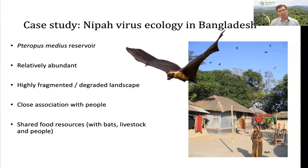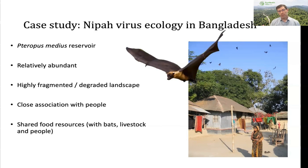In Bangladesh, it's very common to see trees with bat colonies roosting in them — they live very close to people and can be found all over the country. This species is abundant and common throughout the Indian subcontinent, across South Asia — Sri Lanka, India, Nepal, parts of Pakistan, Bhutan, Bangladesh, Myanmar. They prefer fragmented, degraded landscapes, tend to preferentially roost near human settlements, and are generalist eaters. They eat fruit, including about 26 varieties of fruit also cultivated and eaten by people — so there's a very close association.